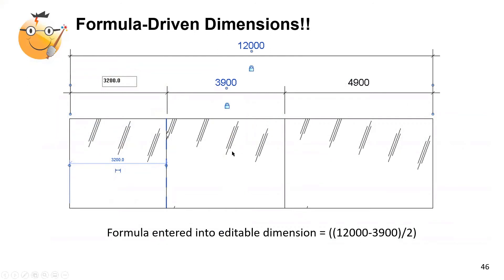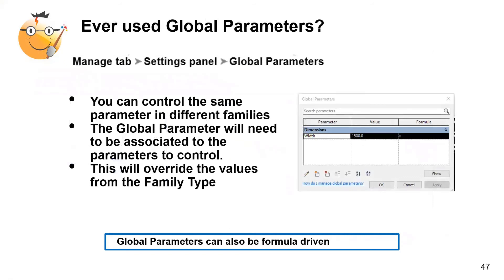Formula-driven dimensions: I use this a lot, especially for curtain walls. I had a curtain wall where I wanted the central panel at 3900mm with two equal side panels. I locked the central panel dimension, locked the overall curtain wall dimension, activated one of the end dimensions, and entered a formula. The result: two perfectly equal side panels without any manual calculation. Why calculate when Revit will do it for you?